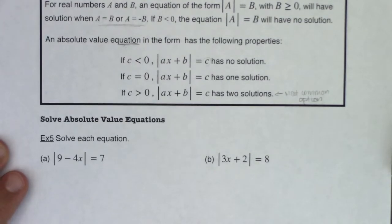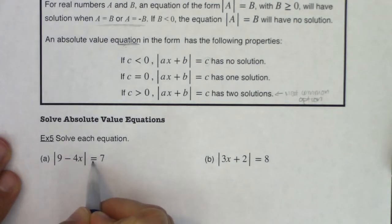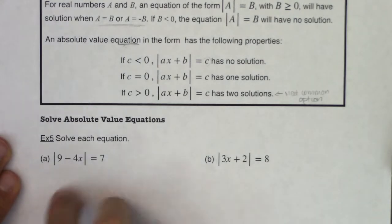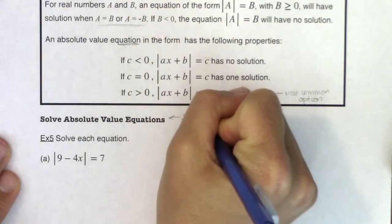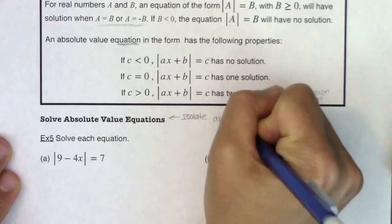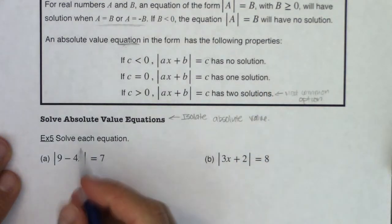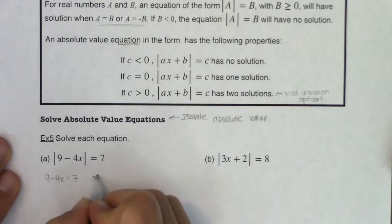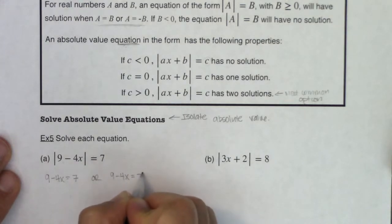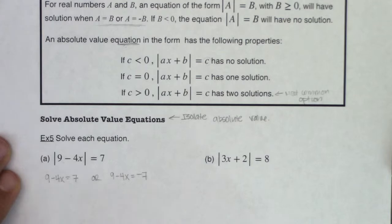Let's take a look at example five. I have an absolute value expression and an equal sign, and my absolute value is already isolated — that's always the first thing you want to do: isolate the absolute value, in the same way we isolated the radical before. When you have the equal sign, let whatever is inside the absolute value equal seven, and also equal negative seven.